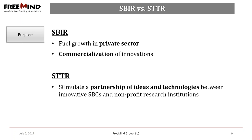While SBIRs and STTRs have some similar goals, their objectives differ in two key ways. SBIRs are intended to increase private sector commercialization of innovations derived from federally funded R&D, by funding early-stage small businesses seeking to commercialize innovative biomedical technologies. STTRs are intended to stimulate a partnership of ideas and technologies between innovative small businesses and non-profit research institutes through federally funded R&D, and therefore require that a small business formally collaborate with a research institute in Phase 1 and Phase 2.